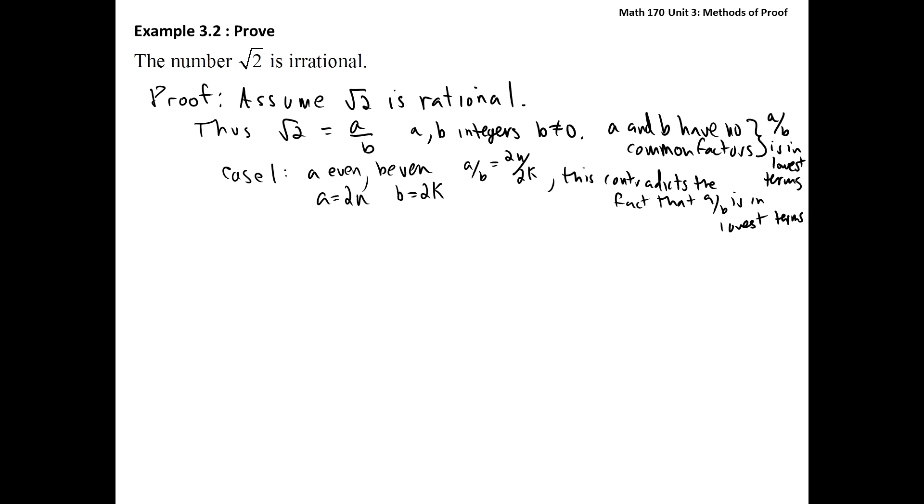Okay, then, second case would be if a is odd, and let's go b even. If this is the case, then when we take a look at the equation that we have, which is root 2 equals a over b, we can square both sides. And what we get is that 2 is equal to a squared over b squared, or that 2b squared is equal to a squared.